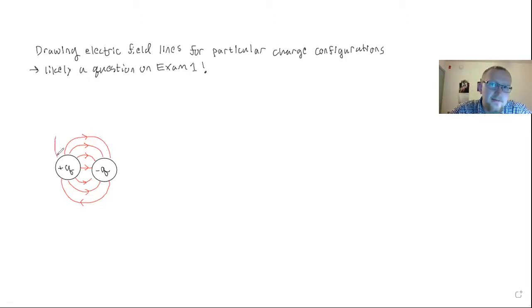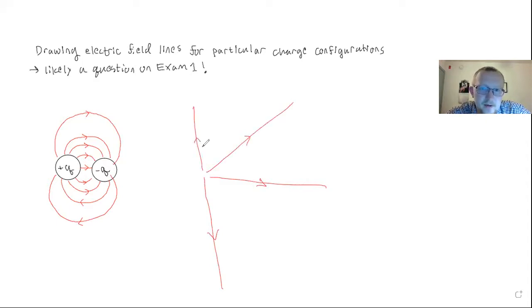One interesting property of this example is that as you start getting to a distance, you're noticing that unlike when we just had a positive charge, the field lines aren't emanating outwards. They're kind of looping in on each other. The electric field strength is going to get weaker and weaker for both these configurations.